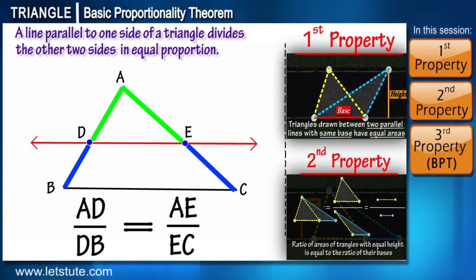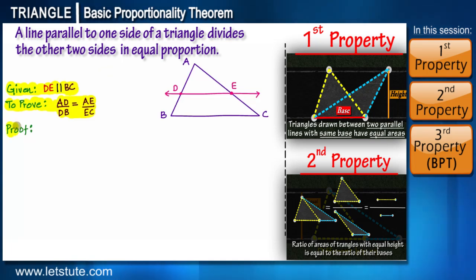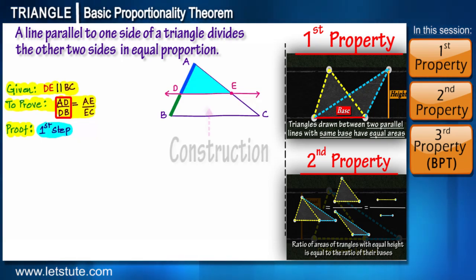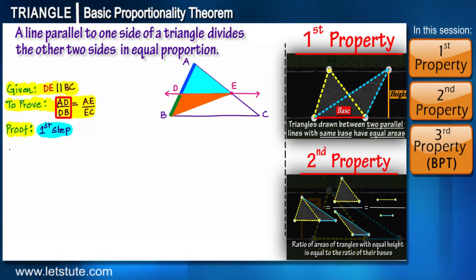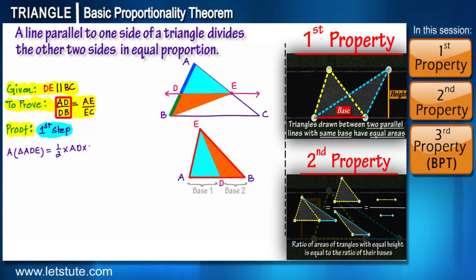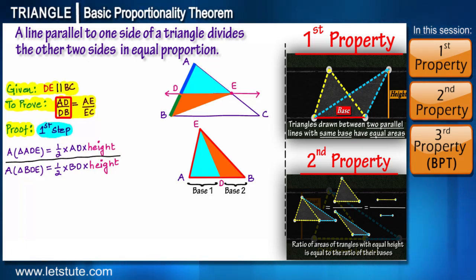We can prove this in three simple steps. In Step 1, we look at sides AD and BD. Triangle ADE has side AD, and we join line BE to get a triangle with side BD. Since AD and DB are required for the proof, we take them as the bases for their respective triangles and find the ratio of their areas, because we want the ratio of AD to BD.